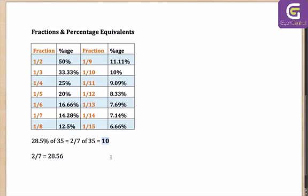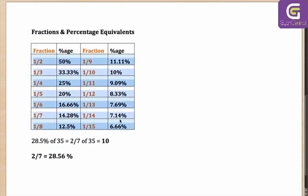Once you have the value of 10, look at the options. If there is an option which is 10 and the others are very, very far away, your answer is 10. However, if there is an option like 9.98 or 10.04, your answer will be just less than 10. Why? Because 2/7 here is 28.56 — so you have calculated 28.56% as giving 10. Since 28.5% is a little less than that, your answer will be slightly less than 10. That is how you use these fractions and their equivalent percentages for easier and faster calculation.